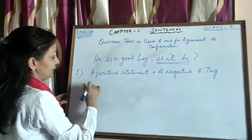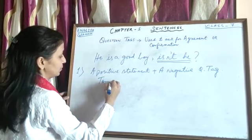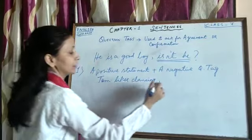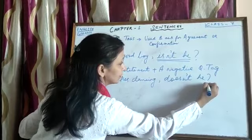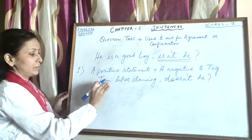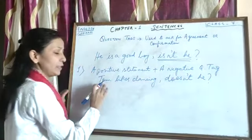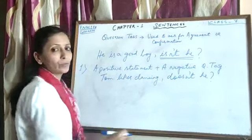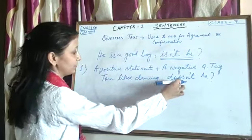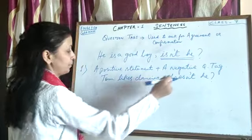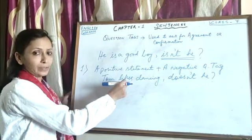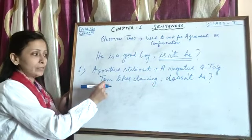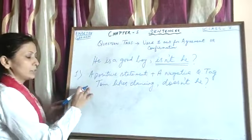I will give you another example. A statement is made: 'Tom likes dancing.' The tag will be 'doesn't he?' Tom here is a proper noun. In its place, we use the pronoun 'he.' If it is a girl, it becomes 'she'; if it is a boy, it becomes 'he.' So Tom is 'he.' This becomes negative here. How do we decide whether to use 'does,' 'do,' or 'don't'? This is a positive verb in the simple present tense form. So we will use 'does,' because the third person singular takes 'does.' So this is the first rule.